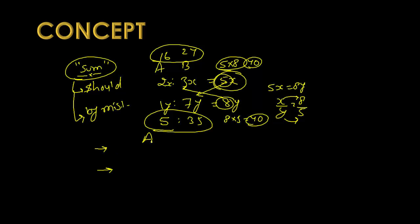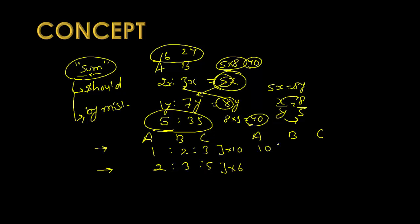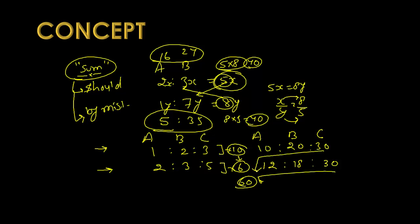Let's look at another example with persons A, B, C. The should ratio is 1:2:3 and the mistake ratio is 2:3:5. The summation of should is 6, so we multiply 6 in the mistake side. The summation of mistake is 10, so we multiply 10 in the should side. This gives new should values of 10:20:30 and new mistake values of 12:18:30, with total cross-multiplication being 6×10=60.